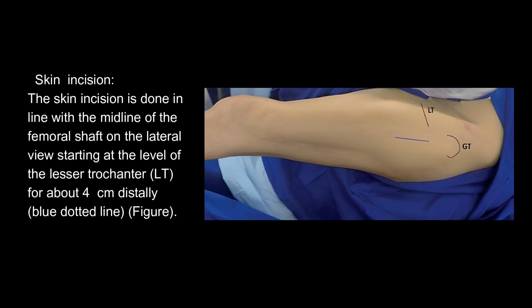Skin Incision: The skin incision is done in line with the midline of the femoral shaft on the lateral view, starting at the level of the lesser trochanter (LT), for about 4 cm distally, shown by the blue dotted line.